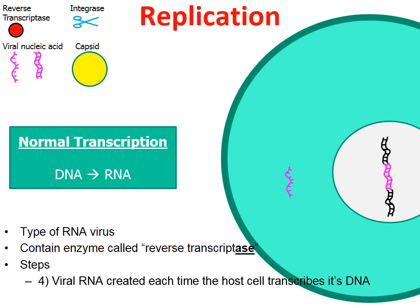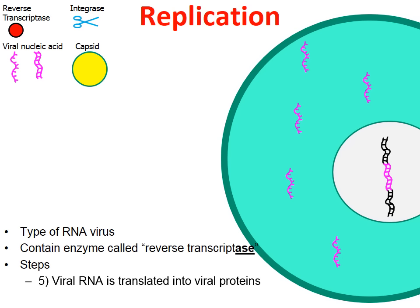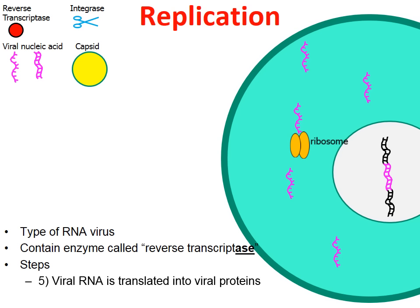This happens many, many times — multiple copies of viral RNA are created through the normal transcription process. In the animation there are five copies of viral RNA being made. Now we see the purpose of making all this viral RNA. In the cytoplasm, cells possess ribosomes, and the viral RNA attaches to a ribosome. Through the process of translation, the ribosome reads the viral RNA and creates viral proteins such as reverse transcriptase.